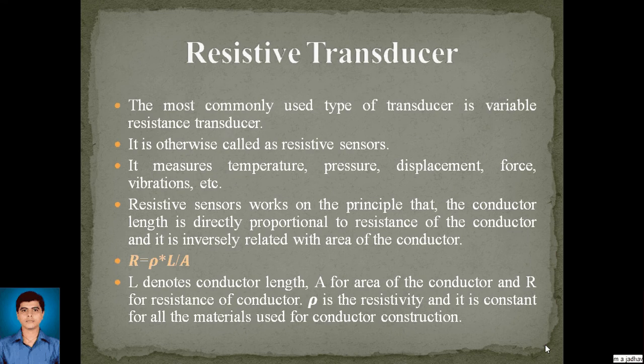The most commonly used type is the variable resistance transducer, otherwise called a resistive sensor. It measures temperature, pressure, displacement, force, vibration, etc. Resistive sensors work on the principle that a conductor's length is directly proportional to its resistance and inversely related to its area. The formula is R = ρL/A, where L is the conductor length, A is the area, R is the resistance, and ρ (rho) is the resistivity, which is constant for a given conductor.